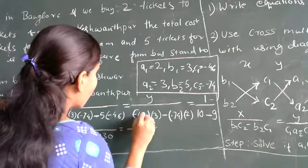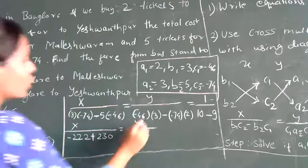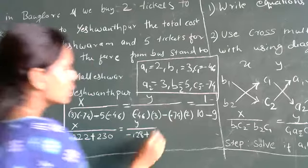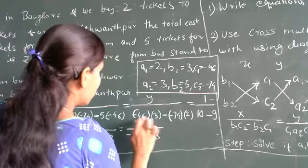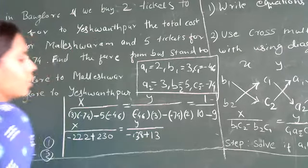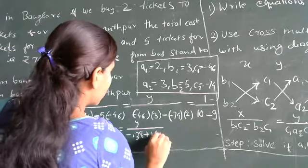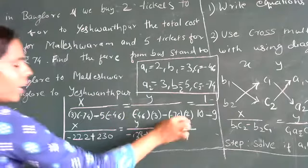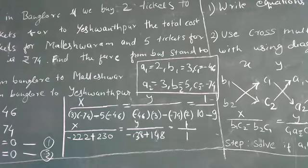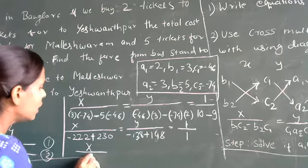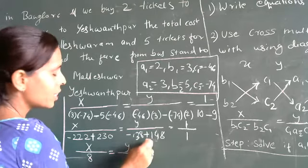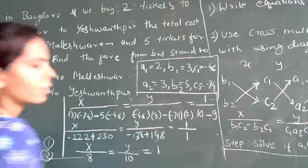Minus and inside the bracket also minus, so it will become plus. 5 times 46 is 230. So x divided by minus 222 plus 230. For y: minus minus will become plus, and we get 128. For the last ratio: minus minus becomes plus, 74 times 2 is 148, minus 1 as it is. 10 minus 9 is 1. So we are having 1 upon 1, which means 1 itself.